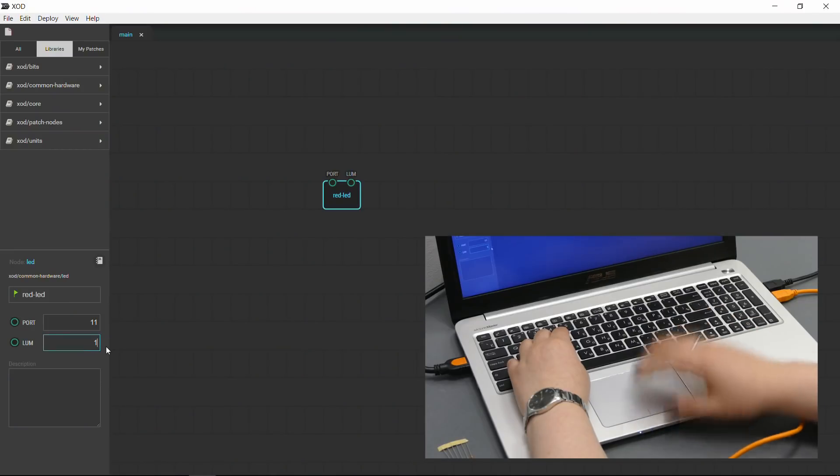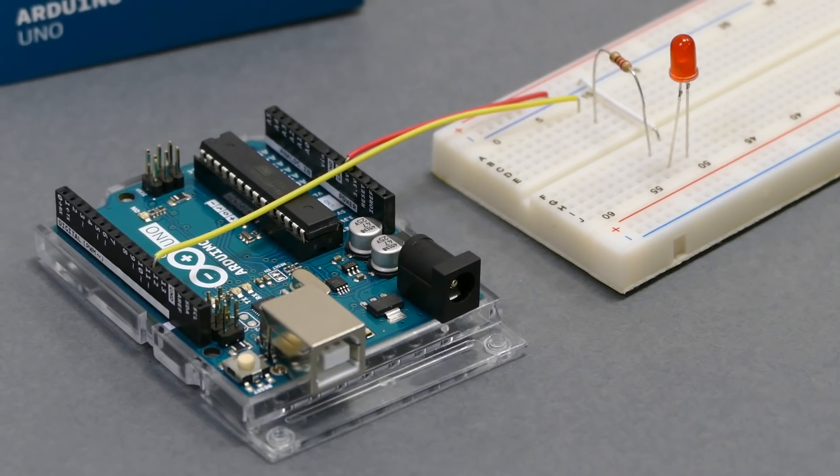And to turn it on, we will give it a value of 1. You can give it a value anywhere from 0 to 1 as a percentage. So if you wanted it to be half bright, you'd type in 0.5.